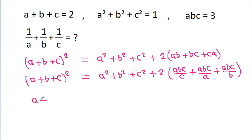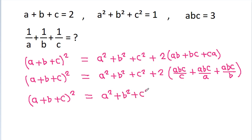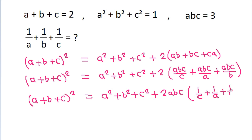And (a plus b plus c) squared is equal to a squared plus b squared plus c squared plus 2 times. We can take abc common, and it becomes abc times (1 by c plus 1 by a plus 1 by b).